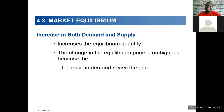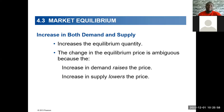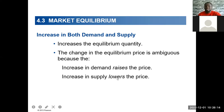When you increase demand, prices are supposed to go up, and when you increase supply, prices are supposed to fall. One is causing price to go up, the other is causing it to fall. So whether it goes up or falls depends on the relative strength of the two. If demand increases more than supply, price will go up. If supply increases more than demand, price will fall. If the magnitudes are the same, there will be no change in price at all.